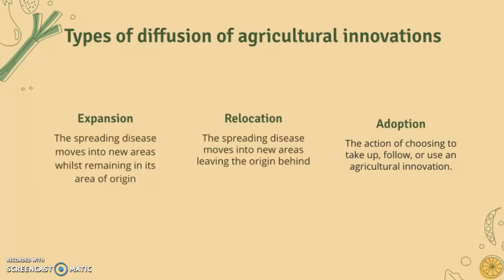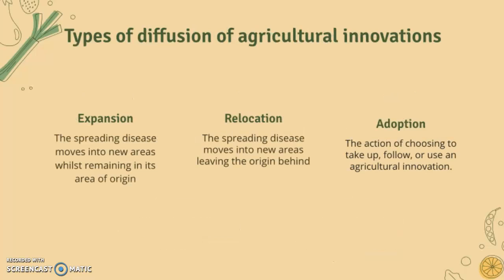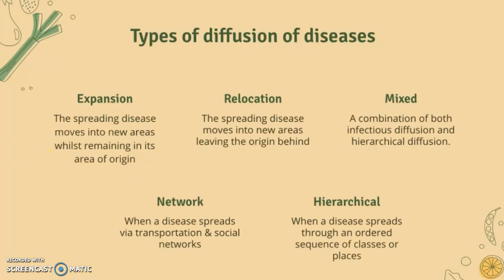We're going to apply this idea of diffusion to diseases as well, because diffusion can be applied to both agriculture and diseases. In terms of diseases, expansion is the spreading of disease moving into new areas whilst remaining in its area of origin, and relocation is similarly the spreading of disease moving to new areas leaving the origin behind.